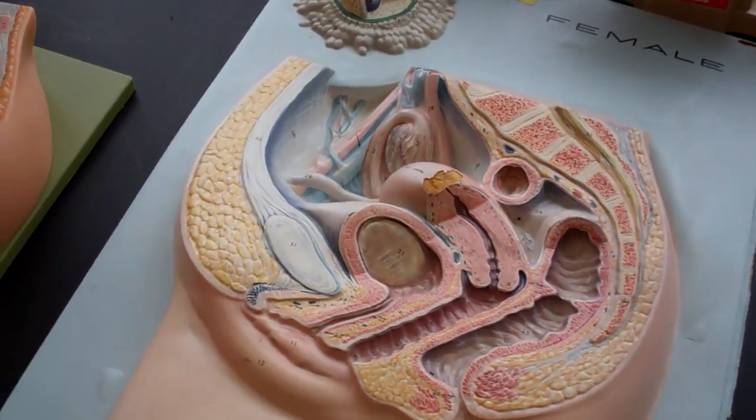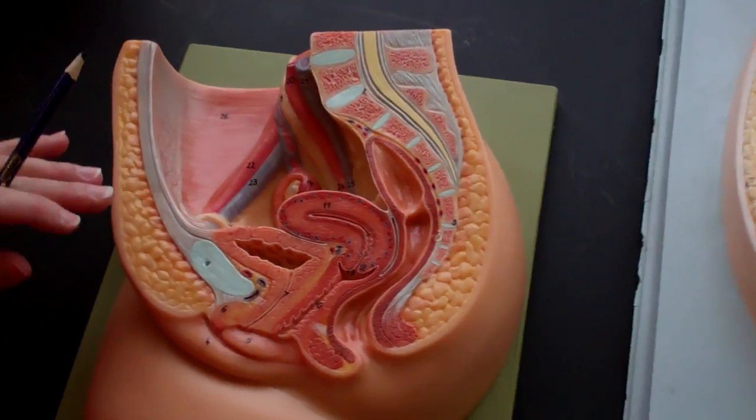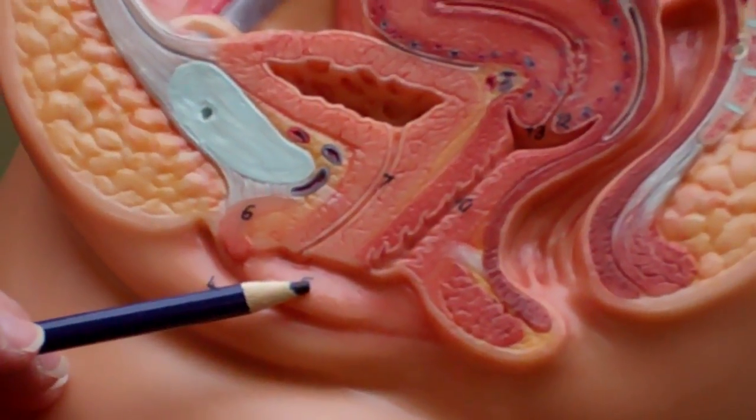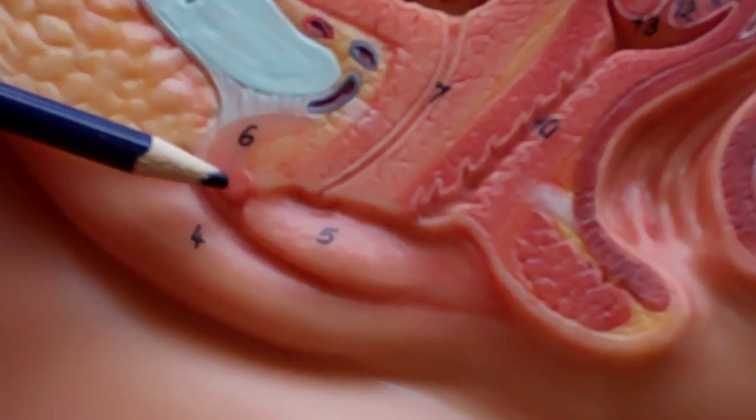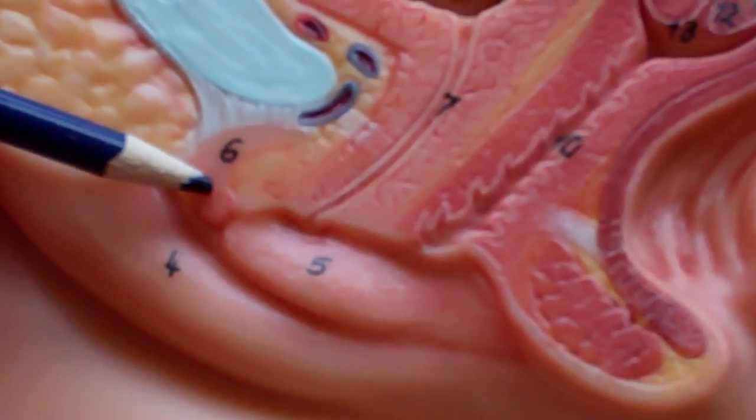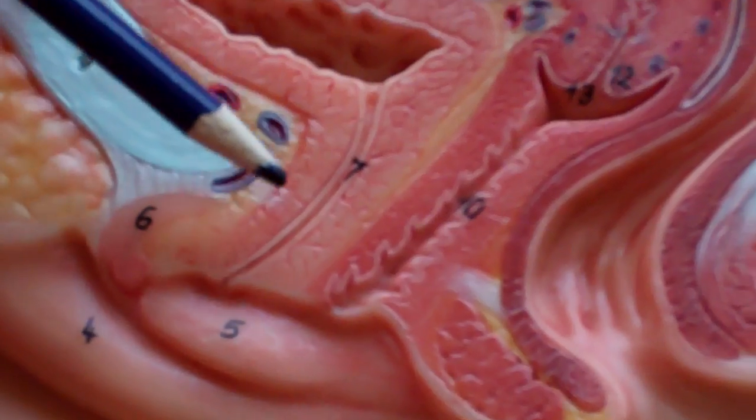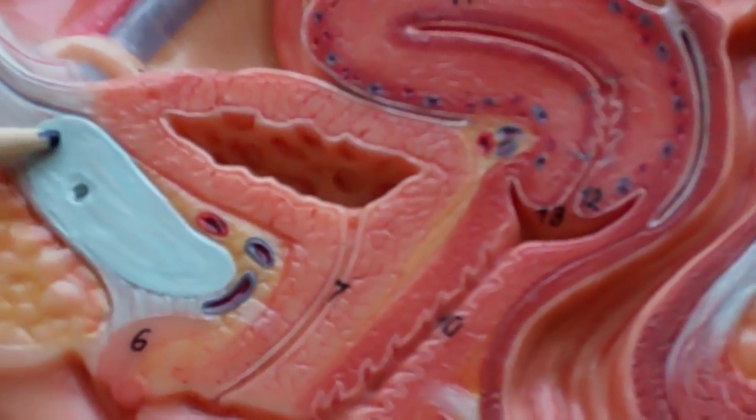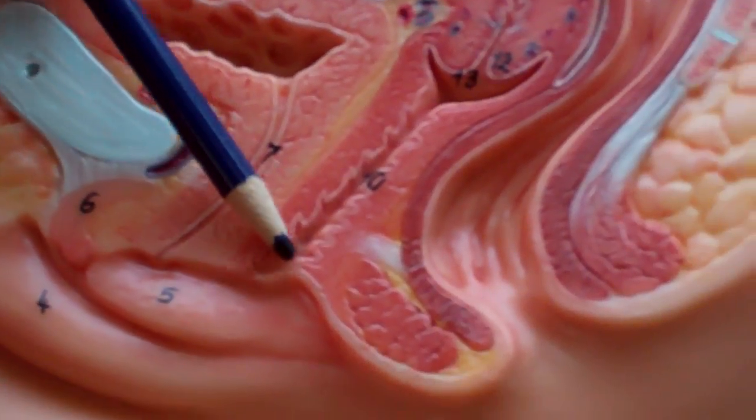This one is a little more specific. Again we have the mons pubis, the labia majora, labia minora, we have the clitoris here for number six. Don't forget about the urinary structures, so the urethra and the bladder. Pubic symphysis. The vagina.